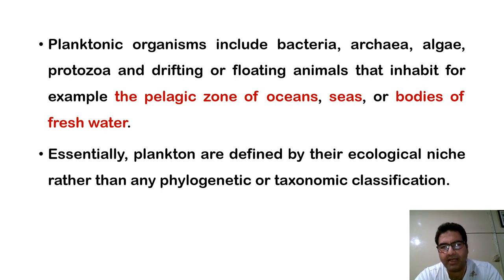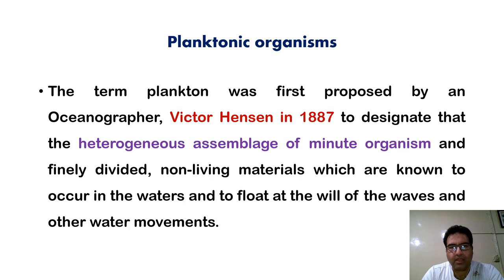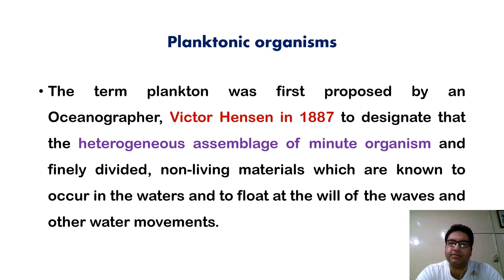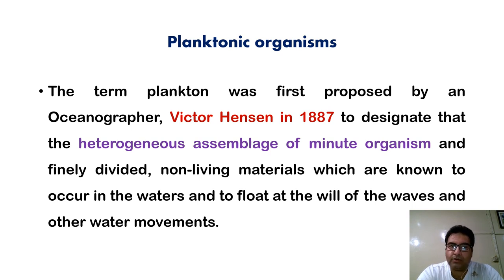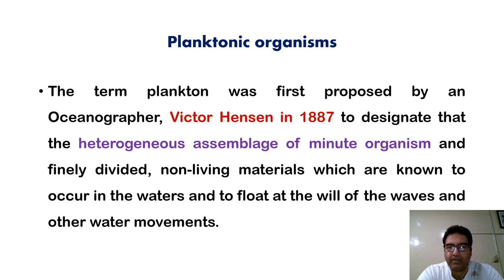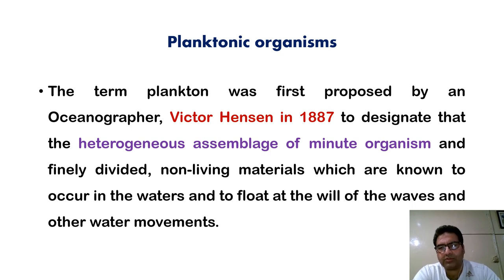Essentially, planktons are defined by their ecological niche, rather than any phylogenetic or taxonomic classification. This very term plankton was first proposed by an oceanographer called Victor Hansen in 1887, to designate the heterogeneous assemblage of minute organisms and non-living materials which are known to occur in the waters and to float at the will of the waves and the other water movements.